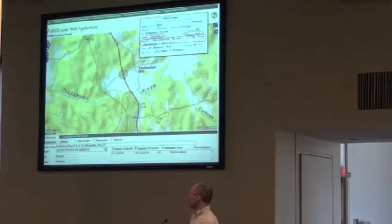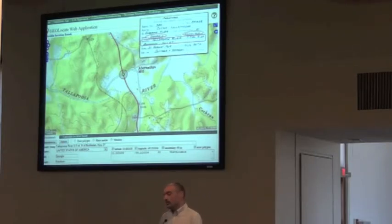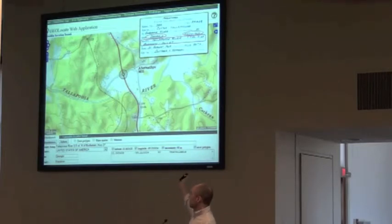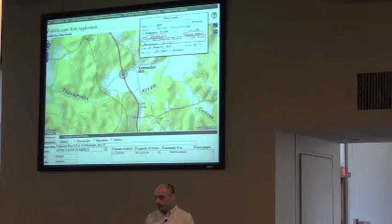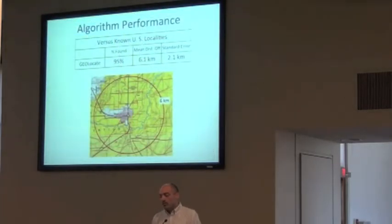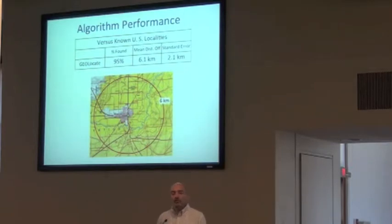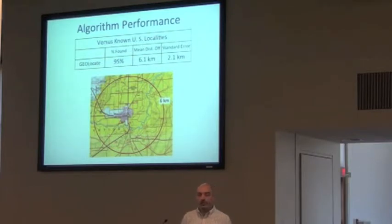Here's an example of what the current version of the web-based application looks like. The idea was to try to keep some kind of similarity between the desktop application and the web-based application. You can still have the map pane up at the top. You can type your data in, then click a georeference button and go through the process of georeferencing it. We have all the data in the Tulane Fish Collection that was georeferenced by hand, and we can use that for measuring the performance of the algorithms.